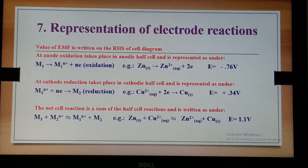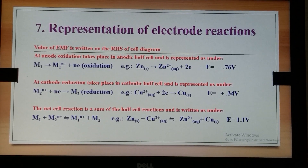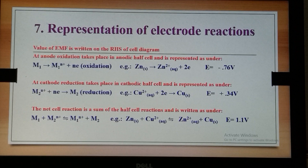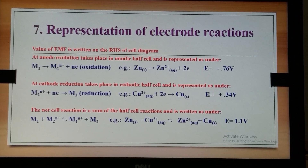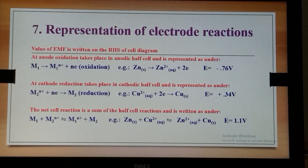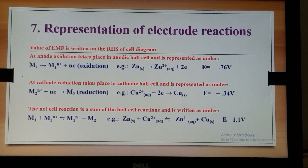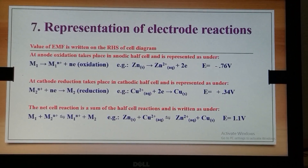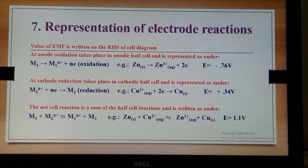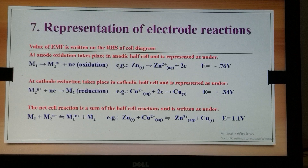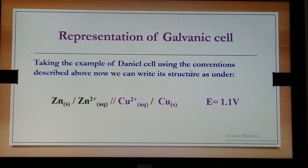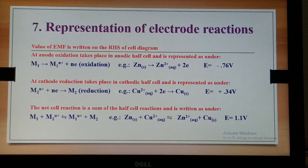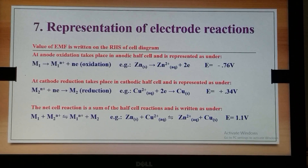The electrode reactions — that is the redox reactions that take place in the two half cells — are represented here. Using the Daniell cell as the example: in the anodic half cell, zinc is getting oxidized, liberating two electrons; and in the cathodic half cell, the copper ions are accepting the electrons and getting reduced to copper.